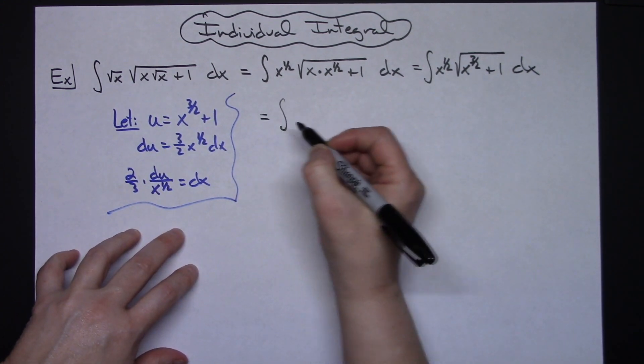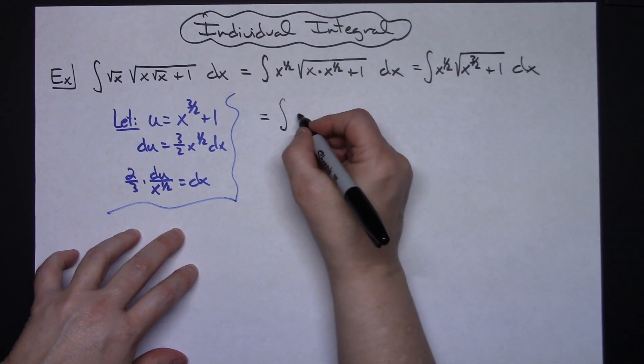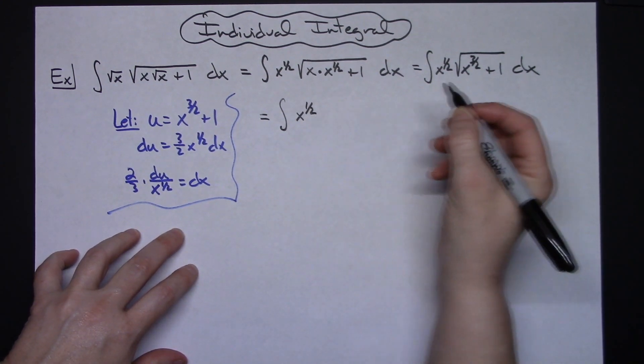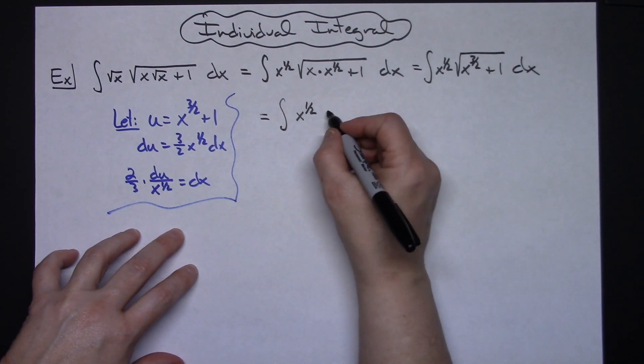So I'm going to have the integral and then I'll have that x to the 1 half will still be there. I'm going to replace what's underneath there with my u, so square root of u.